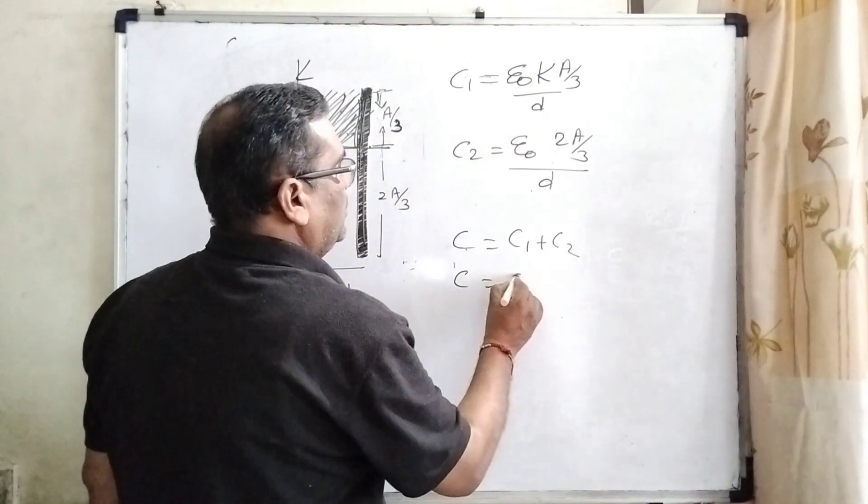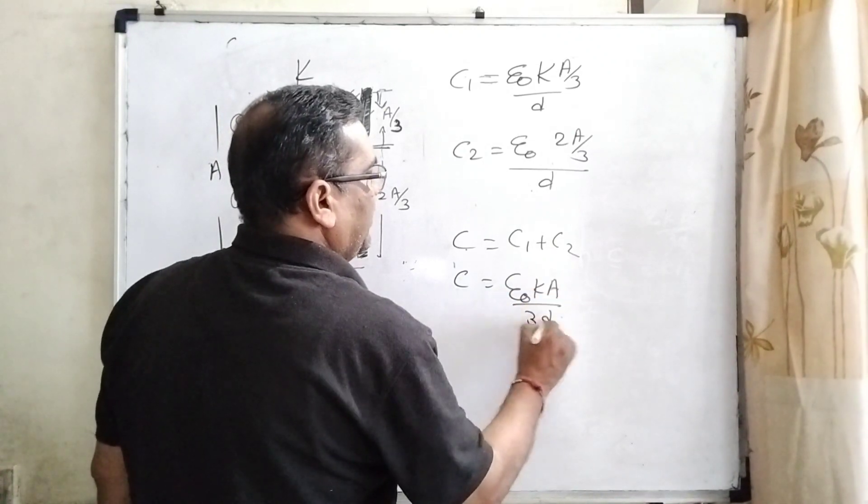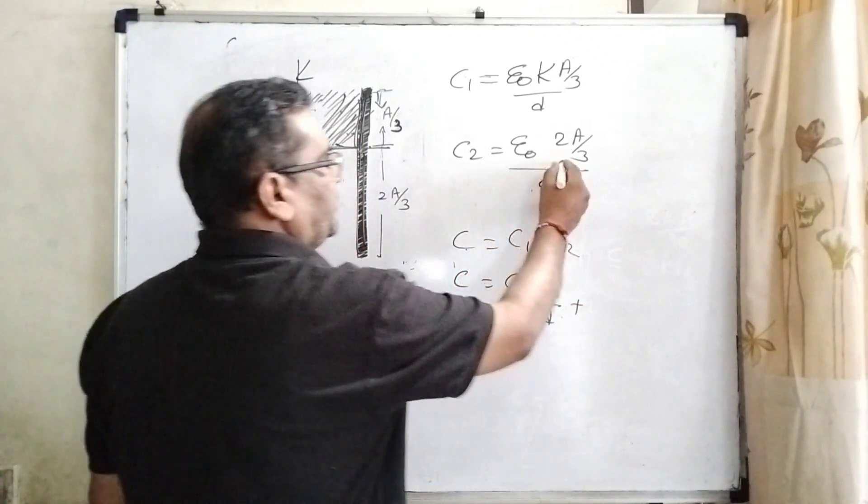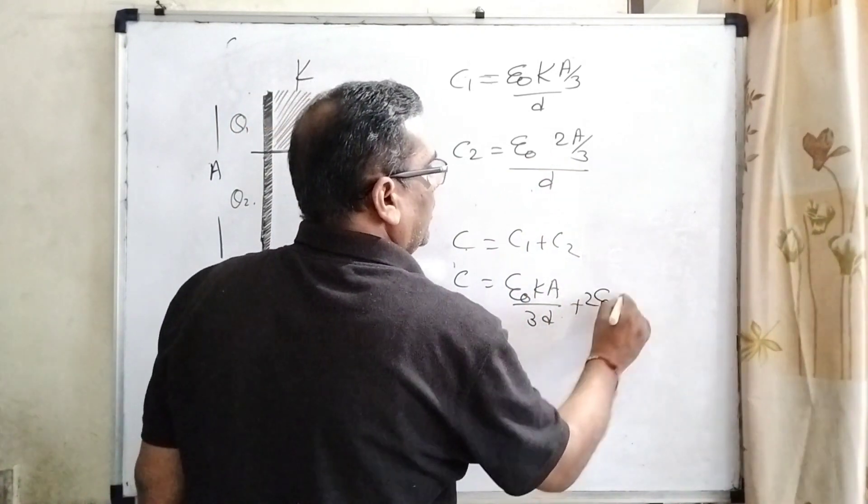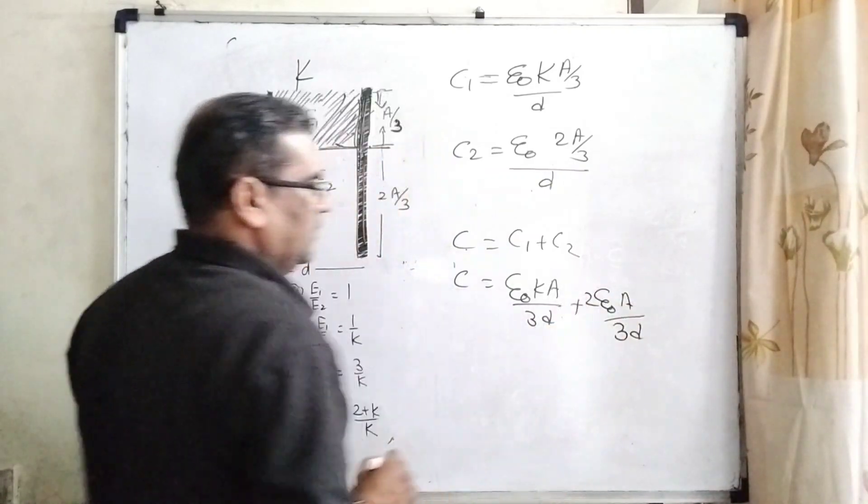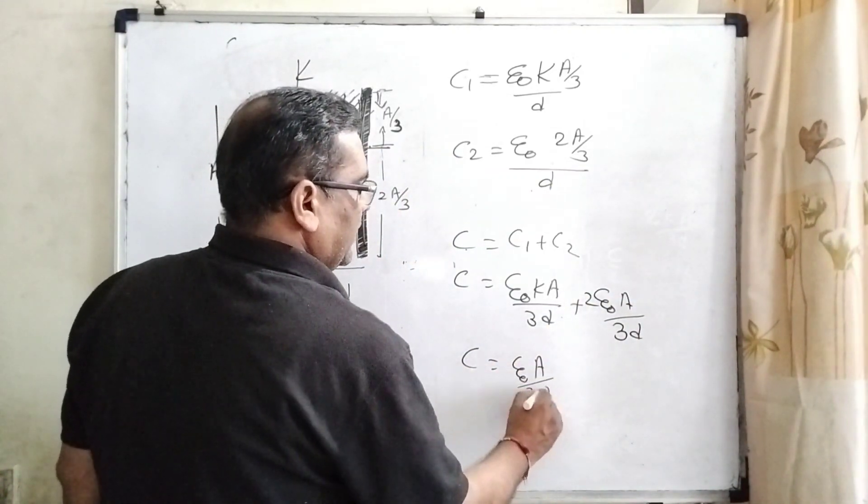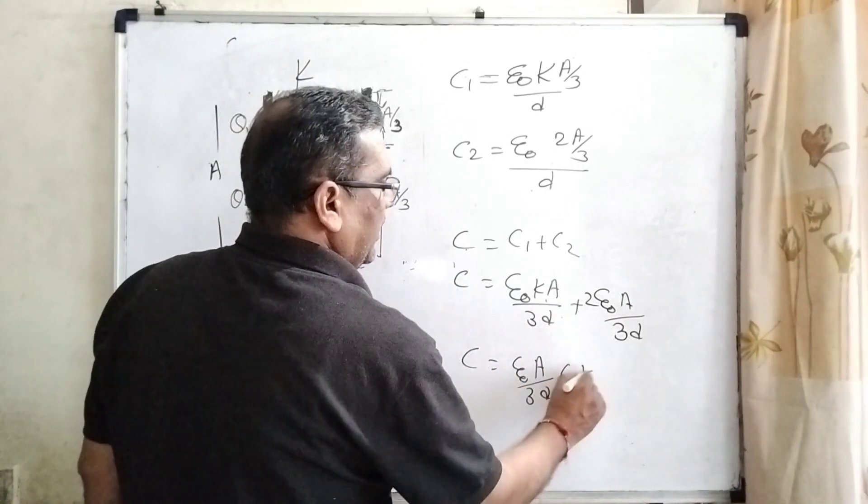Now substitute these values: epsilon naught K A by 3d and epsilon naught 2A by 3d. Now epsilon naught A by 3d gets common, then it becomes K plus 2.